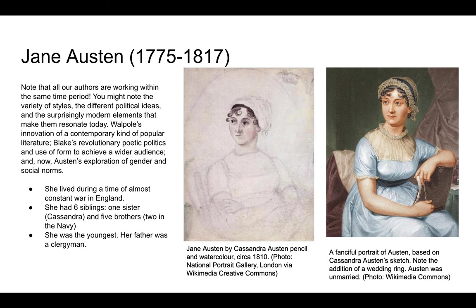Jane Austen's dates are 1775 to 1817. She's writing in the same time period as Horace Walpole, who's a little bit earlier actually, but generally speaking the 18th century, and she's also writing at the same time that William Blake was working. In fact, Lady Susan was written about the same time that Blake published Songs of Innocence. All of these authors are working within the very same period of time. You might note the vast difference in styles and the different political ideas and even the surprisingly modern elements that make them resonate today.